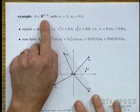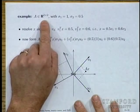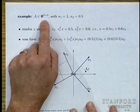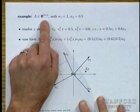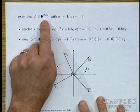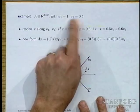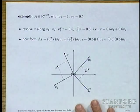Let's look at a 2×2 baby example. For a 2×2 matrix you don't need the SVD to understand what it does. With singular values of 1 and 0.5: